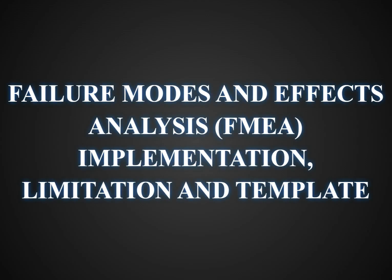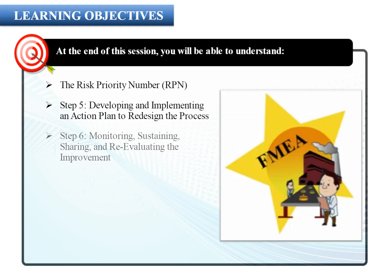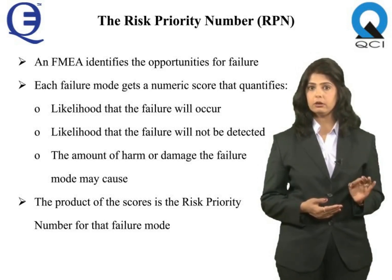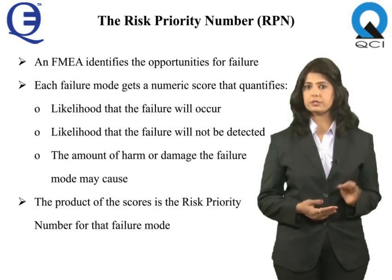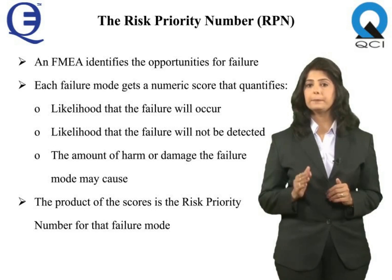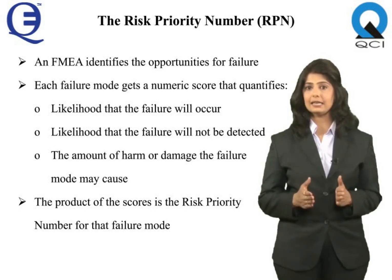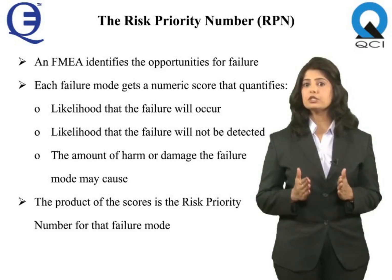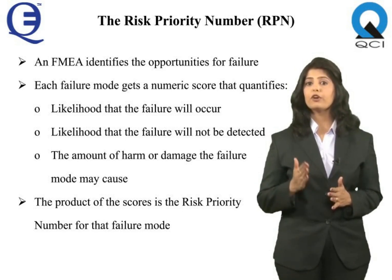The risk priority number, or RPN, is central to FMEA. An FMEA identifies the opportunities for failure, or failure modes, in each step of a process. Each failure mode gets a numeric score that quantifies: (a) the likelihood that the failure will occur, (b) the likelihood that the failure will not be detected, and (c) the amount of harm or damage the failure mode may cause to a person or to equipment. The product of these three scores is the RPN for that failure mode.